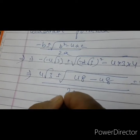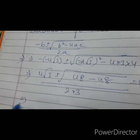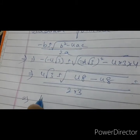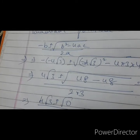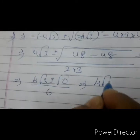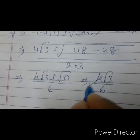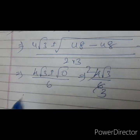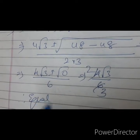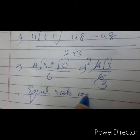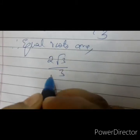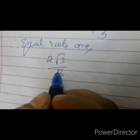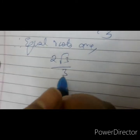Divided by 2a, which is 2 into 3 equals 6. Since the discriminant is 0, we get 4 root 3 plus or minus root 0, divided by 6 — that is 4 root 3 by 6. Simplifying, 2 divides into 4 and 6, so the equal roots are 2 root 3 by 3. Thank you.